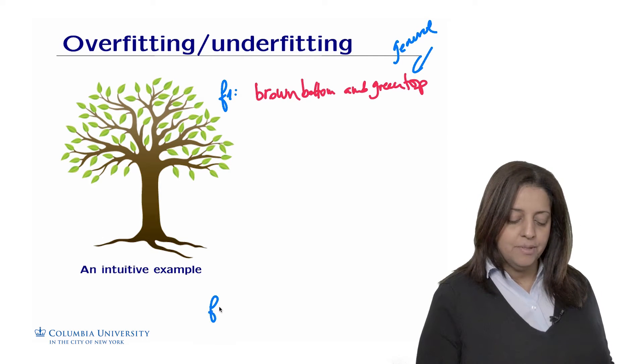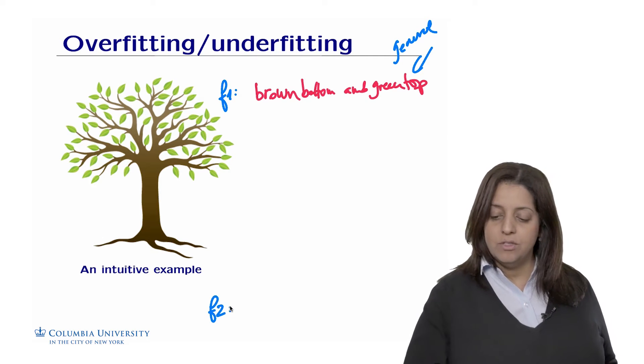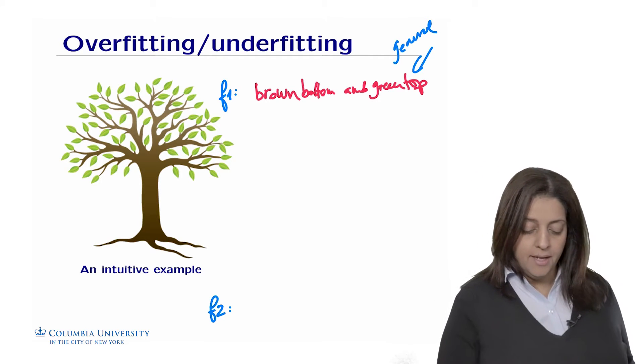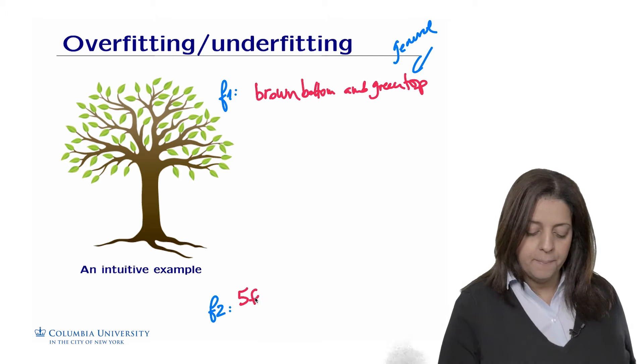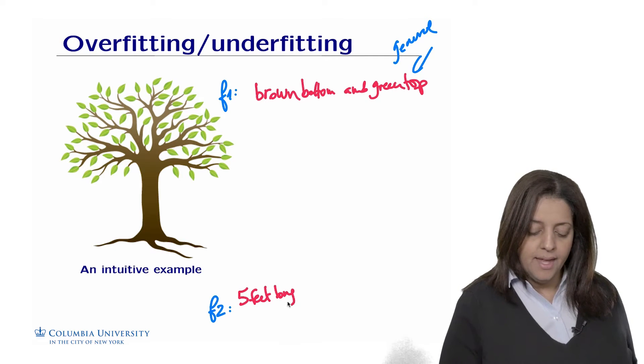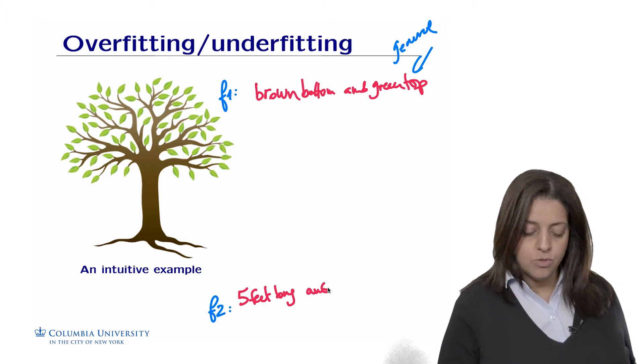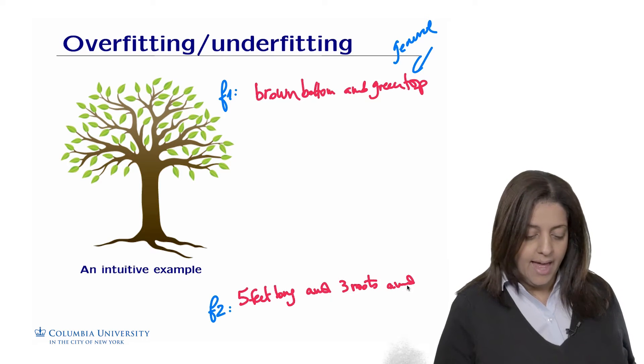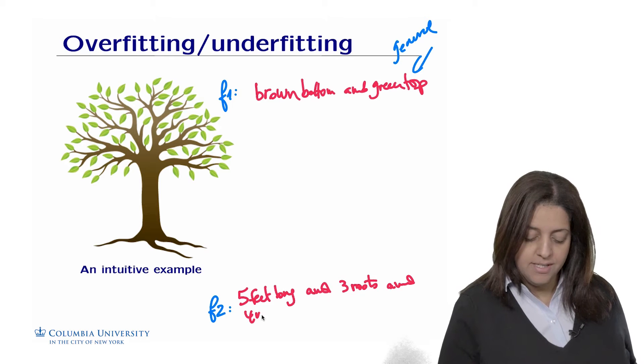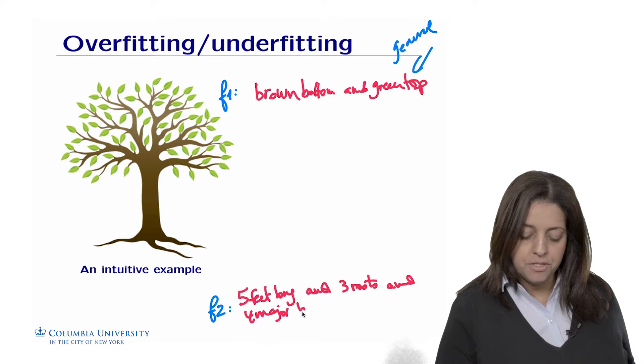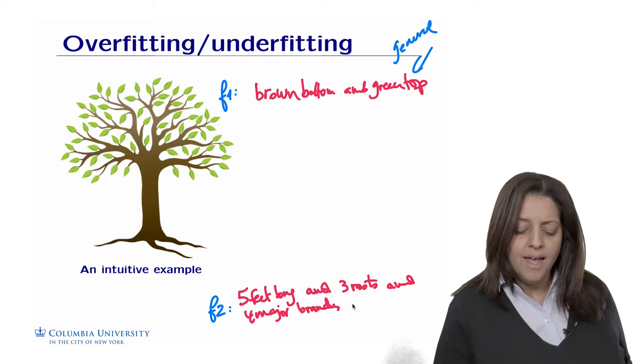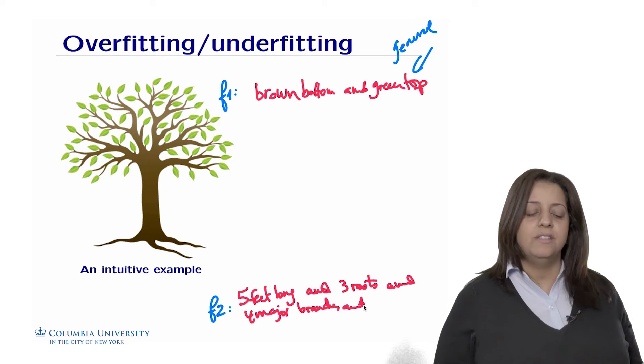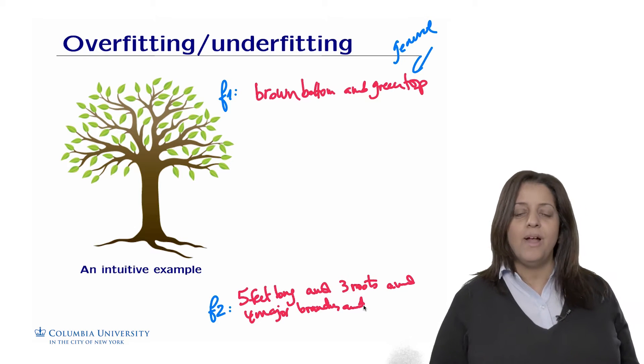A second possible function describing what's a tree could be, let's give as much detail as we can about the tree. So it could be that this tree is five feet long. And actually this tree has three roots and has four major branches. And we could go on and on describing very specifically what's this tree.